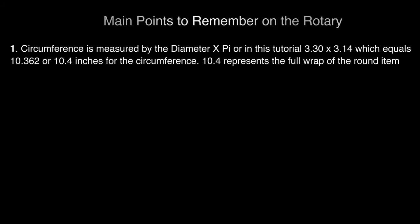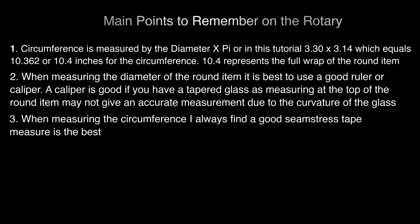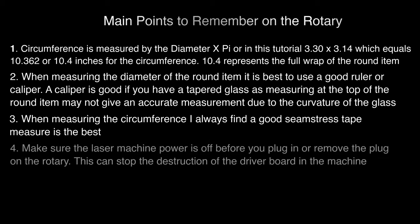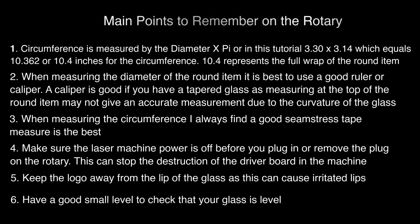A few key points to remember on the rotary: first, circumference is measured by diameter times pi — in this tutorial, 3.3 times 3.14 equals 10.362, or rounded off 10.4 inches for the circumference. That 10.4 represents the full wrap of the round item. When measuring the diameter it's best to use a good ruler or caliper — a caliper is especially good for a tapered glass. When measuring circumference, a seamstress tape measure is best. Make sure the laser machine power is off before plugging in or removing the rotary plug, as this can destroy the driver board. Keep the logo away from the lip of the glass to avoid irritated lips, and use a small level to check that your glass is level.